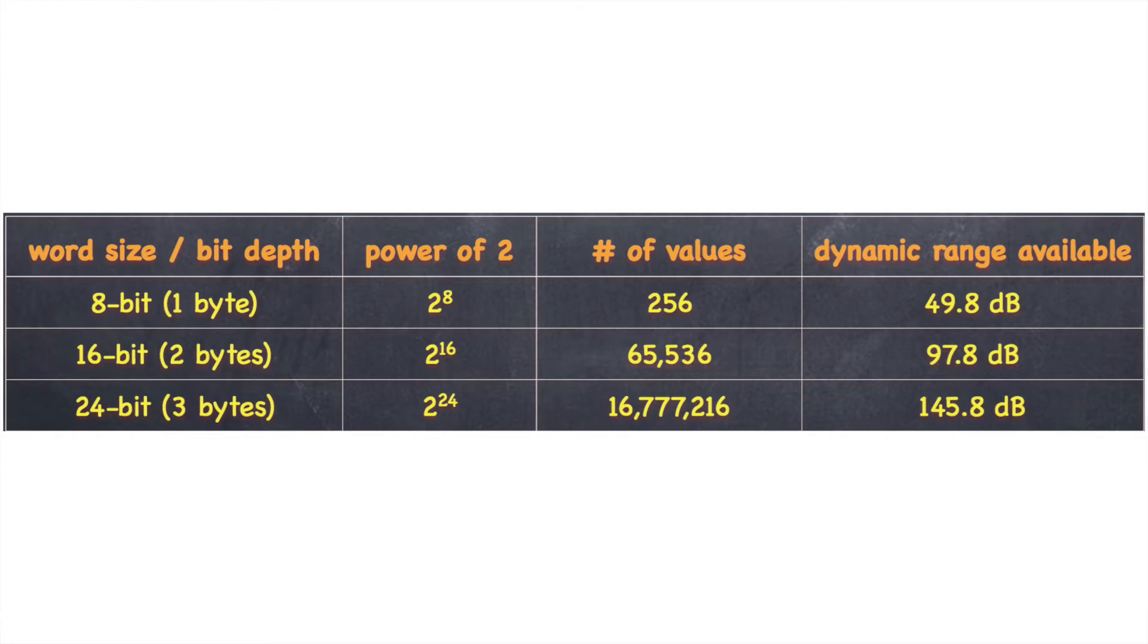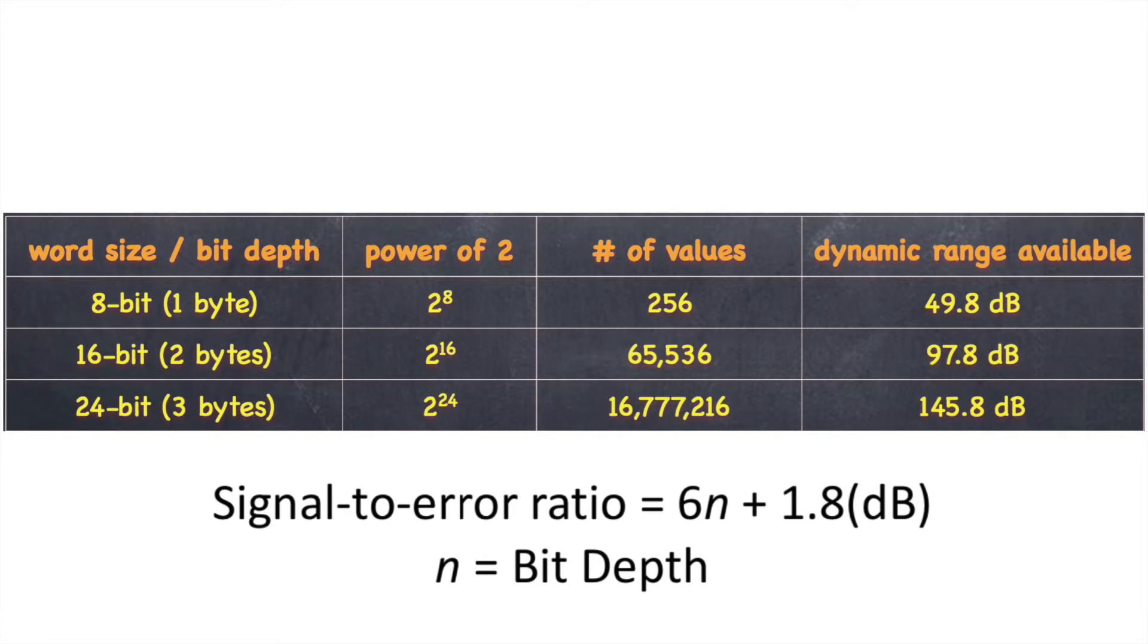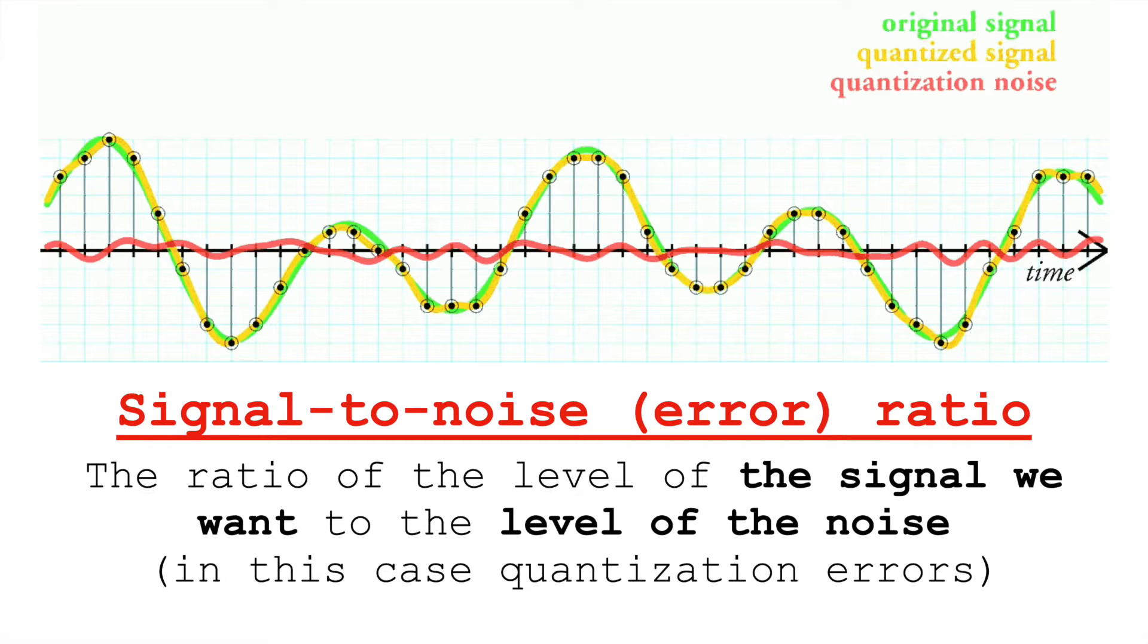We can figure out the dynamic range of each of these resolutions, the signal-to-noise ratio, with the equation 6n plus 1.8 decibels, with n being the bit depth. So 16 bits, 6 times 16 is 96, plus 1.8, 97.8 decibels. The signal-to-noise ratio is comparing the level of the signal we want to the level of background noise. It's the ratio of the sound we're trying to record to the errors. In this case, the digital error is caused by the limited number of amplitudes we can represent in a digital system.